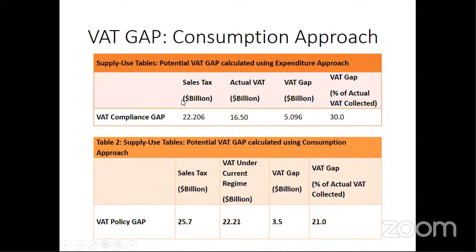The first column gives the sales tax base from the input-output table using the formula discussed. The second column is actual VAT collected by FBR. The difference — tax base minus actual VAT — gives $5 billion. This $5 billion is the VAT compliance gap in 2020, representing 30% of the total actually collected by FBR. The policy gap is similarly estimated: the sales tax base under the current regime is $22.2 billion, and the difference of $3 billion represents revenue foregone due to exemptions, provisions, and special treatment — equal to 21% of actual VAT collected.